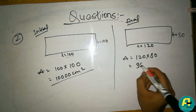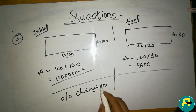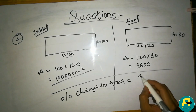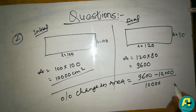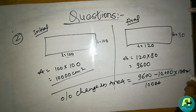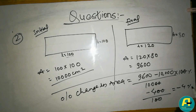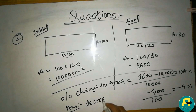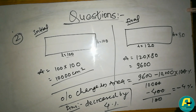New area = 120 × 80 = 9600. Initial area = 100 × 100 = 10,000. Percentage change in area = (final minus initial) divided by initial × 100% = (9600 minus 10,000) divided by 10,000 × 100% = minus 400 divided by 10,000 × 100% = minus 4%. The area decreases by 4%.